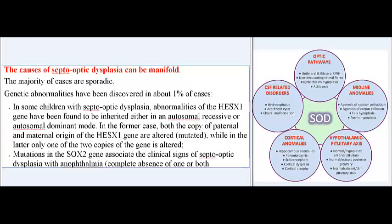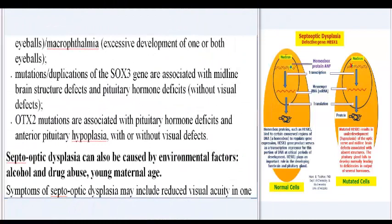Mutations in the SOX2 gene associate the clinical signs of septo-optic dysplasia with anophthalmia (complete absence of one or both eyeballs) or microphthalmia (excessive development of one or both eyeballs). Mutations or duplications of the SOX3 gene are associated with midline brain structure defects and pituitary hormone deficits without visual defects. OTX2 mutations are associated with pituitary hormone deficits and anterior pituitary hypoplasia, with or without visual defects.